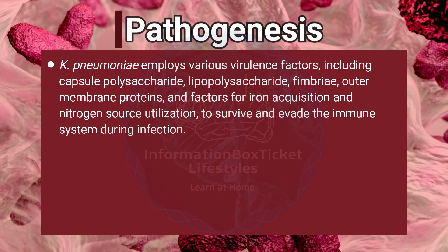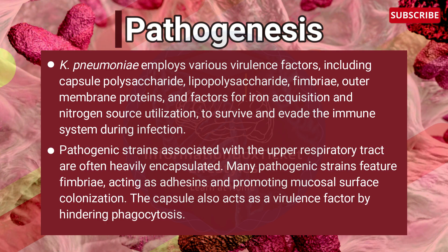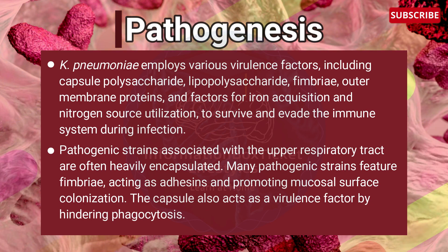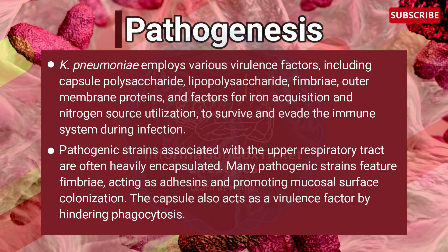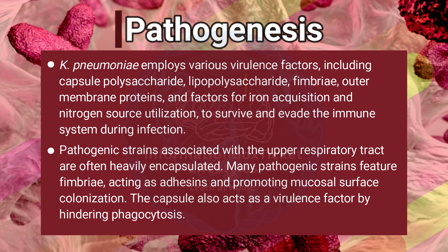Klebsiella pneumonia employs various virulence factors including capsule polysaccharide, lipopolysaccharides, pili, outer membrane proteins, and factors for iron acquisition and nitrogen source utilization to survive and evade the immune system. Pathogenic strains associated with the upper respiratory tract are often heavily encapsulated, and many feature fimbriae acting as adhesins promoting mucosal surface colonization. The capsule also acts as a virulence factor by hindering phagocytosis.